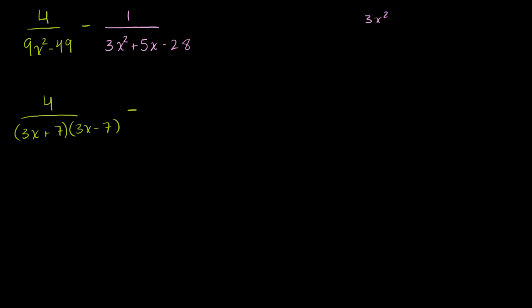So I have 3x squared plus 5x minus 28. I need to find two numbers that when I multiply them I get 3 times negative 28, so that's negative 84. And a plus b should be equal to 5. So what numbers? Well this is 7 and 12. 7 times 12 is 84. So if you make this a 12 and you make this a negative 7, then it works. 12 minus 7 is 5.